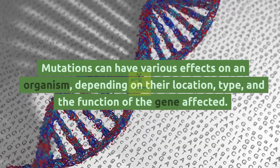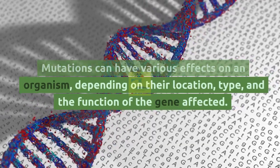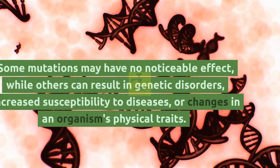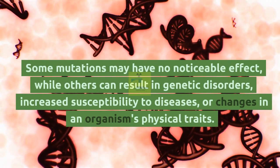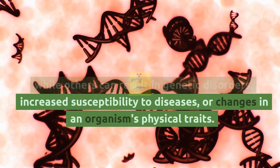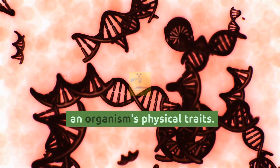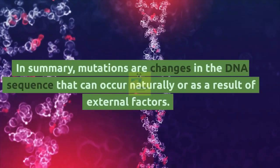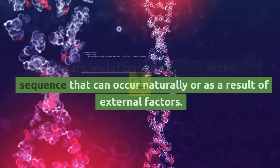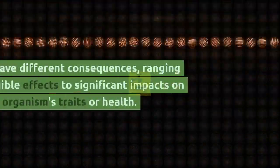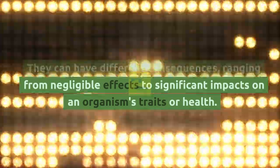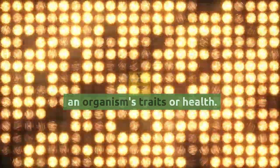Mutations can have various effects on an organism, depending on their location, type, and the function of the gene affected. Some mutations may have no noticeable effect, while others can result in genetic disorders, increased susceptibility to diseases, or changes in an organism's physical traits. In summary, mutations are changes in the DNA sequence that can occur naturally or as a result of external factors, ranging from negligible effects to significant impacts on an organism's traits or health.